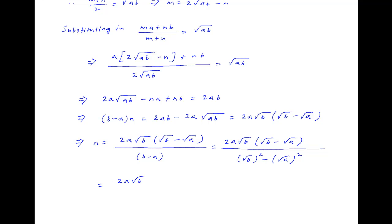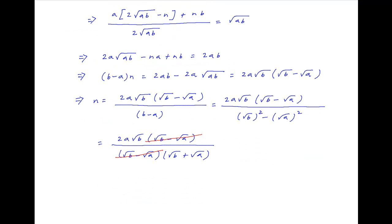This equals 2A√B(√B - √A) divided by (√B - √A)(√B + √A). The factor (√B - √A) cancels across the numerator and denominator, and therefore N is equal to 2A√B divided by (√A + √B).